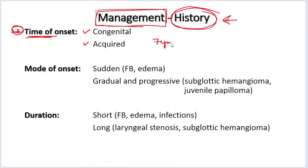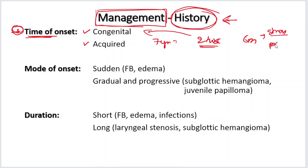For example, suppose the baby is seven years old and has a two-hour history — then it is definitely not congenital. But if it is a six-month-old baby presenting with Strider in the prone position, you can think of laryngomalacia. So the time of onset gives you direction. Mode of onset — is it sudden or gradual?